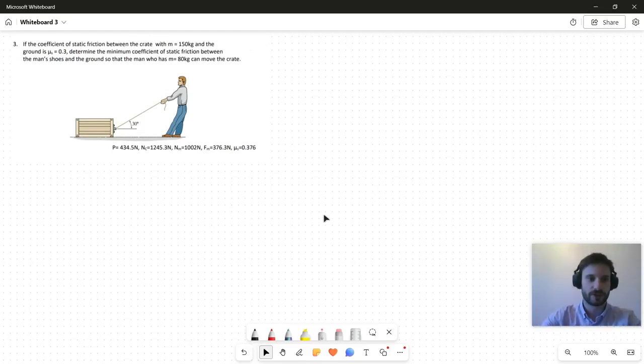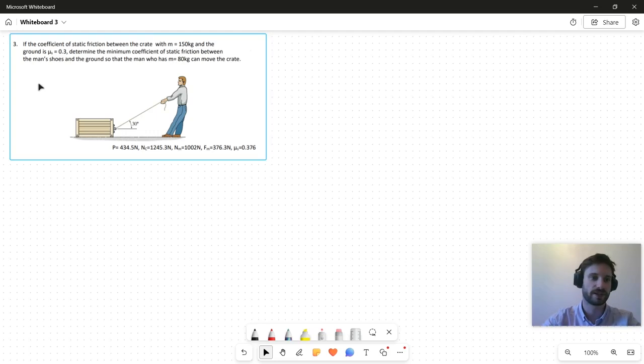Hello and welcome to this video tutorial for E411 Statics and Dynamics of Simple Mechanisms. We have this problem here: If the coefficient of static friction between the crate with a mass of 150 kilos and the ground is 0.3, determine the minimum coefficient of static friction between the man's shoes and the ground so that the man who is 80 kilos can move the crate.